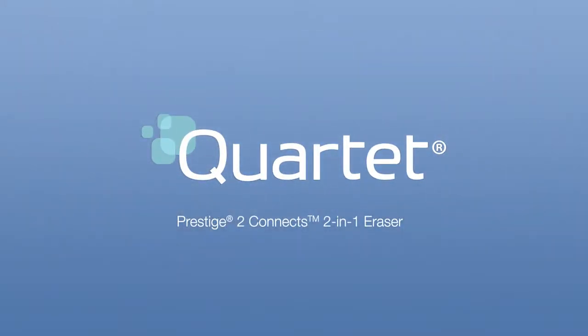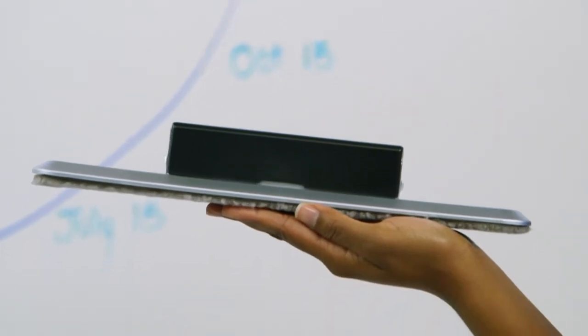Quartet Prestige 2 Connects 2-in-1 Eraser. Conveniently erase the contents of your dry erase board with the Prestige 2 Connects 2-in-1 Eraser.